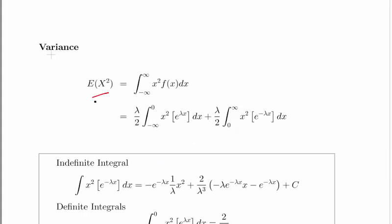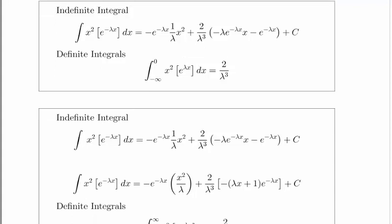To get the variance, we need the expected value of x squared. Because the expected value of x is 0, this is equivalent to the variance. We compute the integral from minus infinity to infinity of x squared times f dx, and again break it into two parts — just like before for E[X], but this time with x squared. We take out lambda over 2 from the integral in both cases. There's a good bit of work in this, but let's go through it.